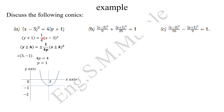Since it's in terms of y as the subject, it opens upward in the y-direction. From the turning point, with p = 1, we go one step down to get the directrix, which is y = -2. The focal point is one step up from the turning point, giving us the focal point (3, 0). So we've determined our directrix and focal point. This parabola has been translated from the origin to the point (3, -1).